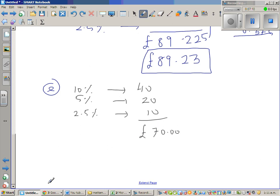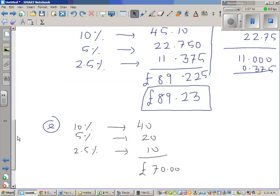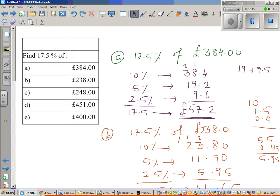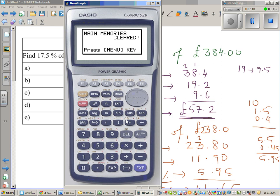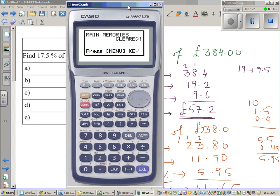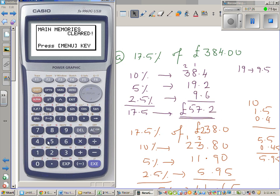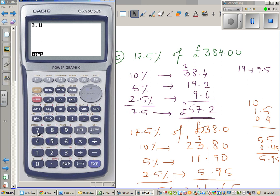So let's check this on a calculator. Okay, so let's start from the very beginning. So 17.5 as a decimal is 0.175. So this is how I do. Menu, run. 0.175 times 384. Just to check with it.